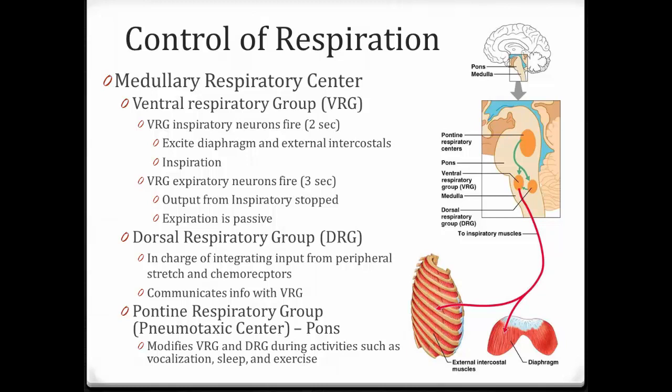The dorsal respiratory group influences the ventral respiratory group by integrating information from peripheral stretch receptors and chemoreceptors, then communicating that to the VRG to change the rate of breathing. This is a fine-tuning adjustment — for example, if there's low CO2, it signals to increase the breathing rate.